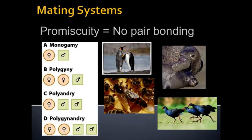Some animals use combinations of these systems, and plants can also have different ones, though for plants it's more about pollination than behavior. For humans, the short answer is there is no single mating system — it depends on the culture. It's very difficult in humans because of our cultures to have widespread polygyny, polyandry, or polygenandry, but they do occur in some cultures, so humans really have all of the above.